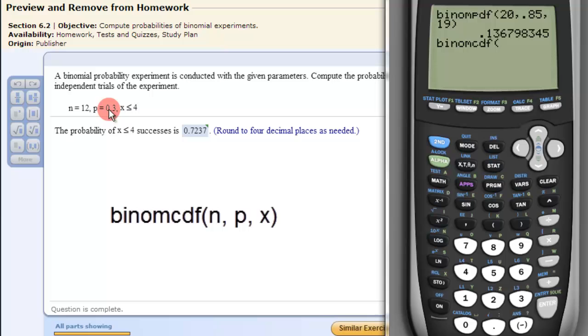Now same thing. The number, probability, and successes. So we have 12, comma, .3, comma, 4. Hit enter.